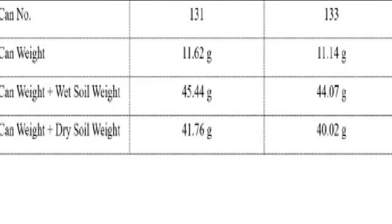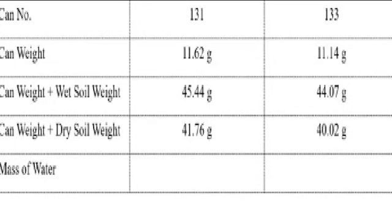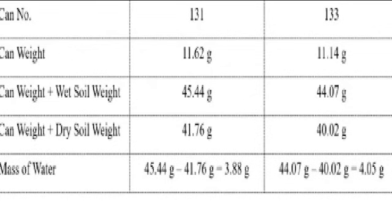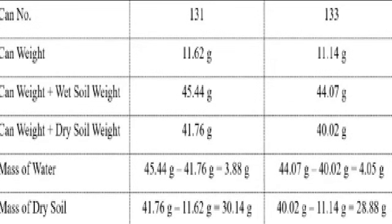Here we have the table form: can 131 and 133. Can weight was 11.62 and 11.14 grams. Can weight plus wet soil was 45.44 and 44.07 grams. Can weight plus dry soil was 41.76 and 40.02 grams. Therefore the mass of water for 131 was 3.88 grams and for 133 it was 4.05 grams after subtracting. Now we simply convert it into a percentage form using the formula given in the beginning.